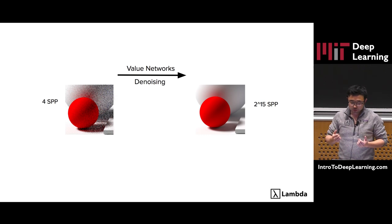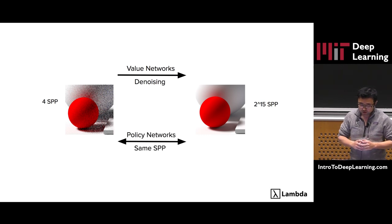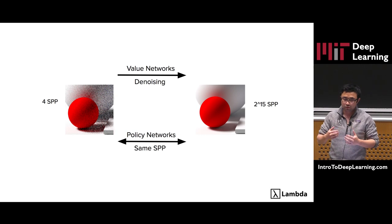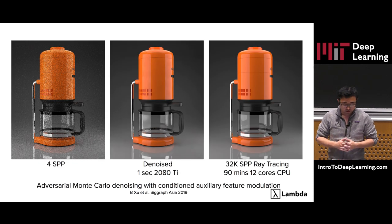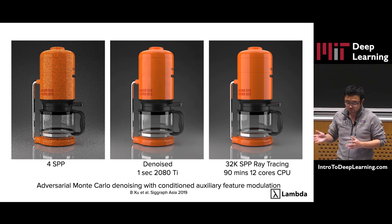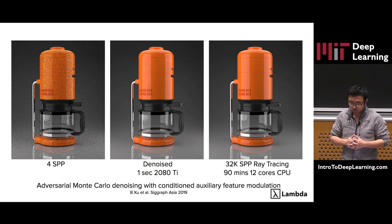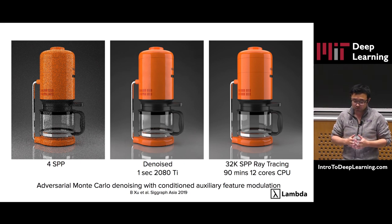For example, we can use a value network to denoise the rendering with low samples per pixel — basically predicting the correct pixel value from a noisy input. This is the recent work we did for denoising Monte Carlo rendering. On the left we have the noisy input image sampled at four samples per pixel. In the middle is the denoised result. On the right is the ground truth reference image rendered with 32,000 samples per pixel, which takes about 19 minutes on a 12-core CPU. In contrast, the denoised result only takes about a second to run on a commodity GPU, so there's a very good trade-off between speed and quality.